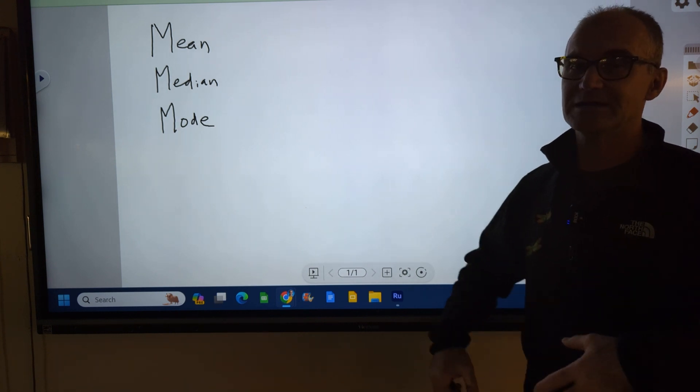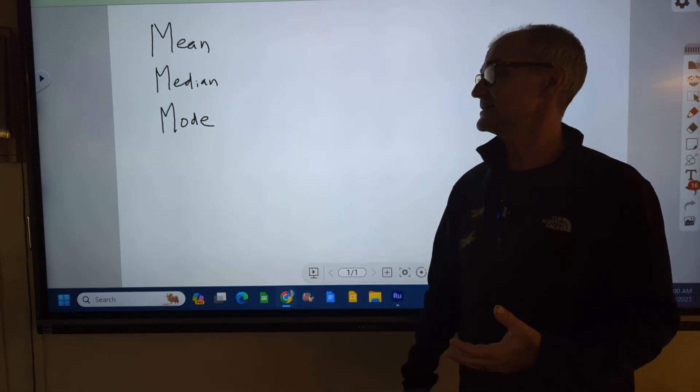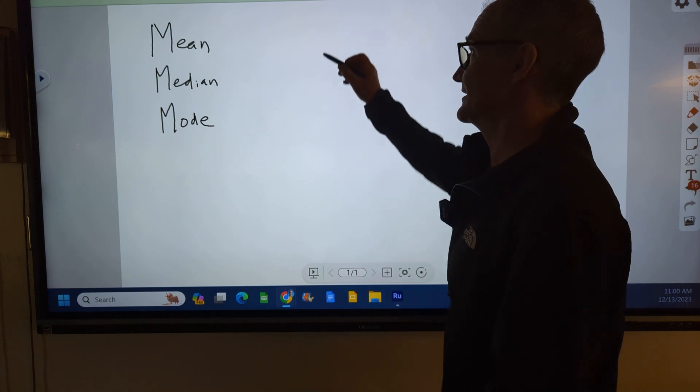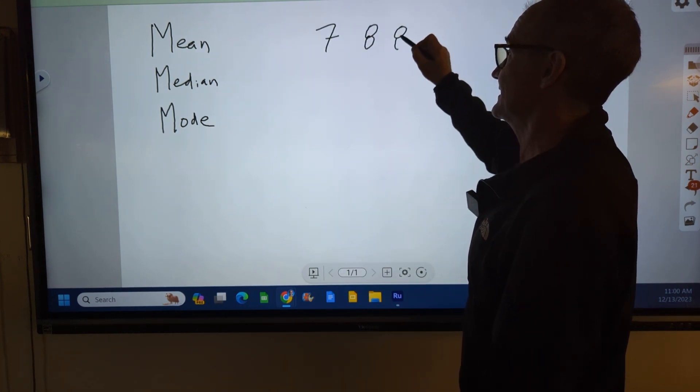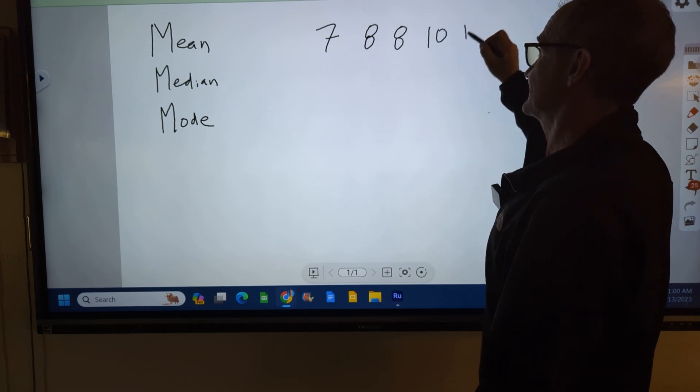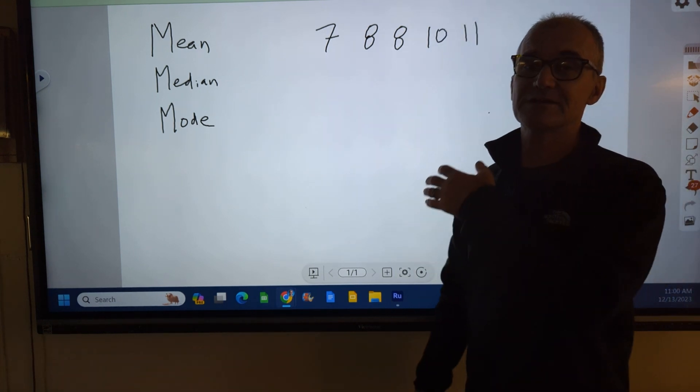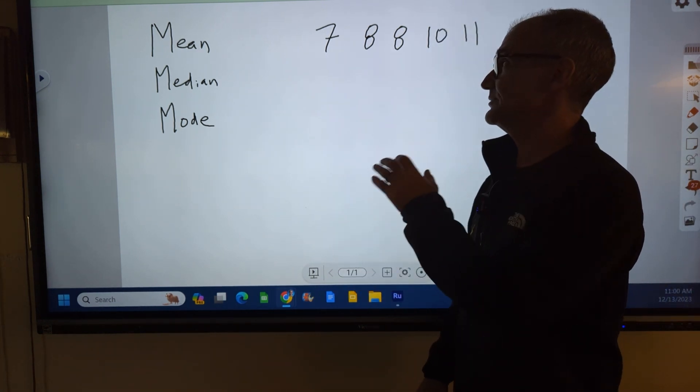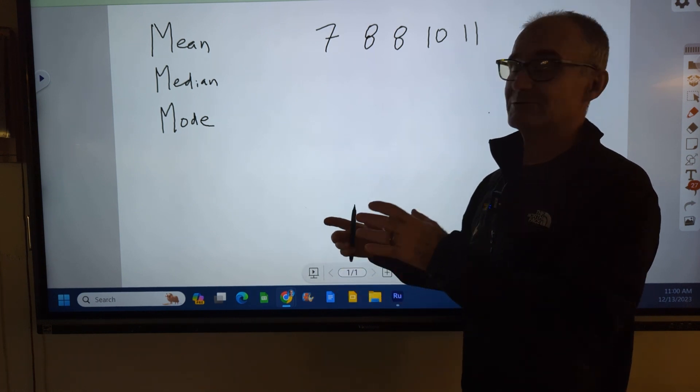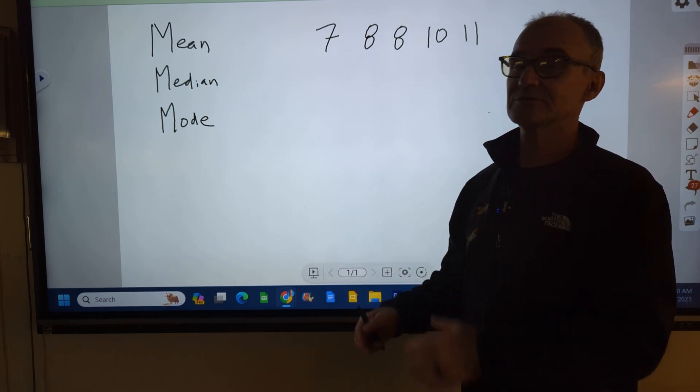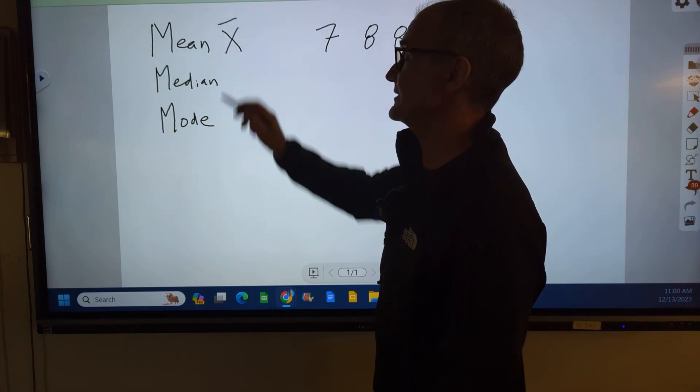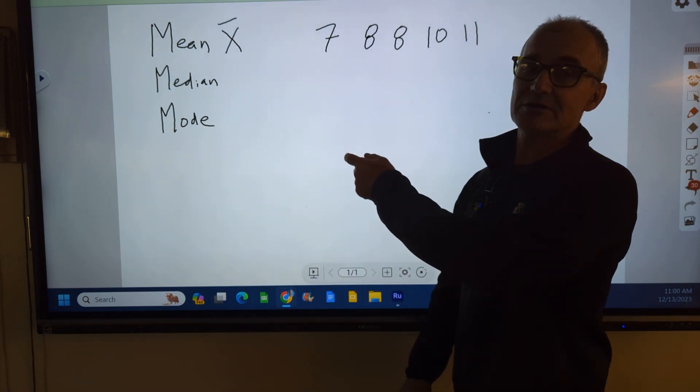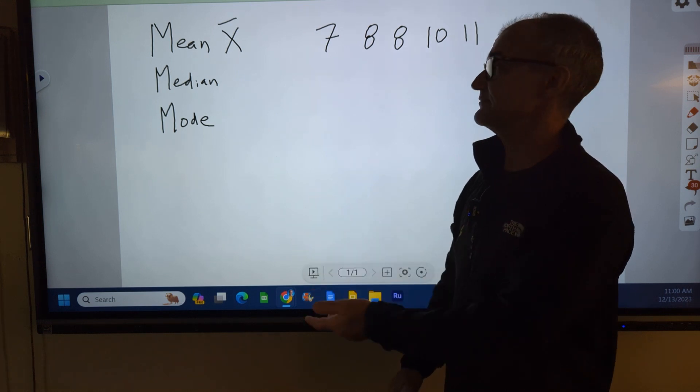So let's say I'm talking about shoe sizes in the U.S. and I have five sizes. I just randomly sample them. I have 7, 8, another 8, a 10, and an 11. So those are my five shoe sizes. Pretty small sample. And I want to find the average. Another word for the average is the mean. Notation for mean is X bar. That means the average. It means the same thing.